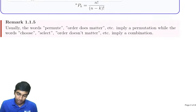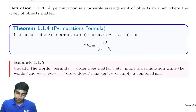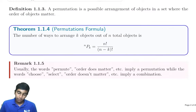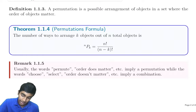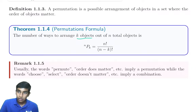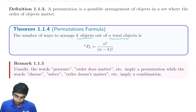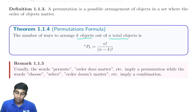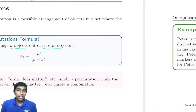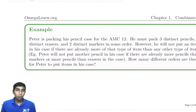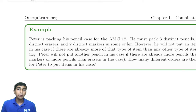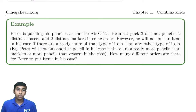Next we have the permutations formula. The number of ways to arrange k objects out of n in order is just n factorial over n minus k factorial. By the way, if you're interested in more of these basic formulas and fundamentals, you can check out the AMC 8 videos linked in the description.